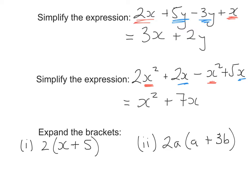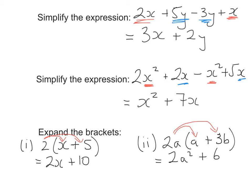The way you do that is you take the number or term on the outside of the bracket and multiply it by everything inside. For the first one, 2 multiplied by x gives me 2x, and 2 multiplied by 5 gives me 10. That's the answer — you can't do anything else. For the next question, 2a multiplied by a gives me 2a squared, and 2a multiplied by 3b: 2 times 3 gives me 6, and a times b gives me 6ab. That's our answer.